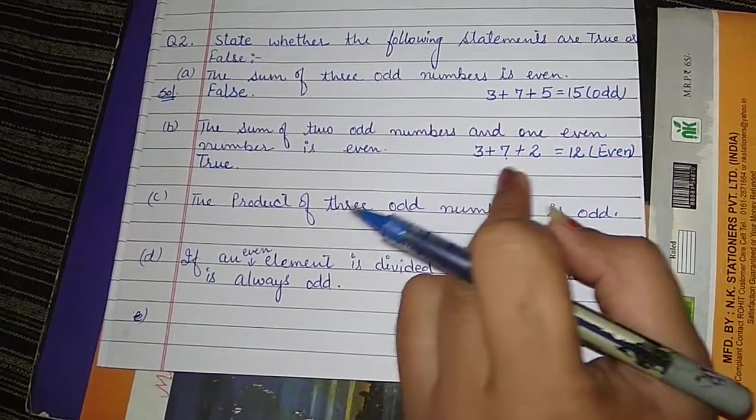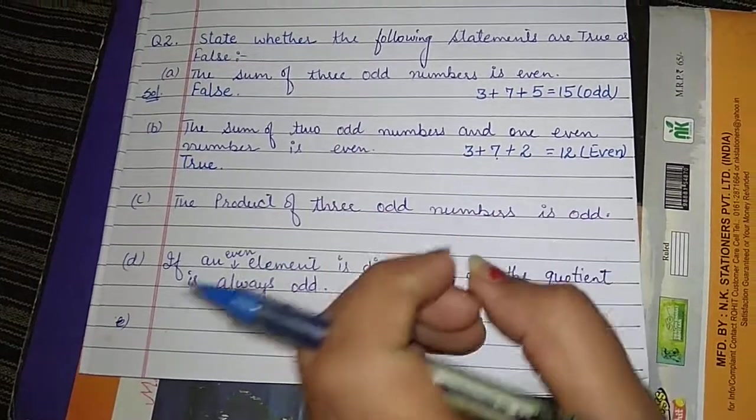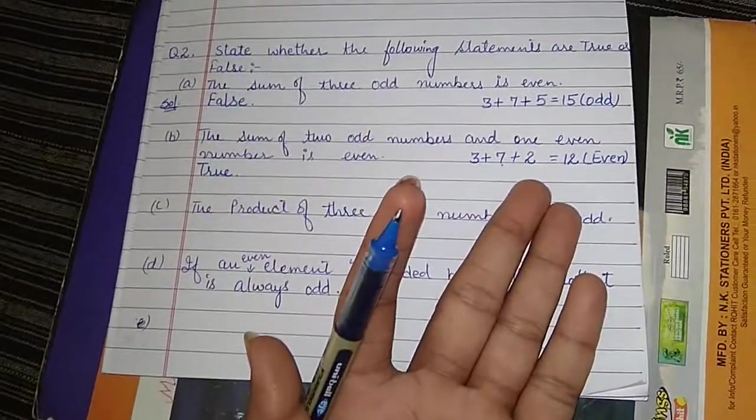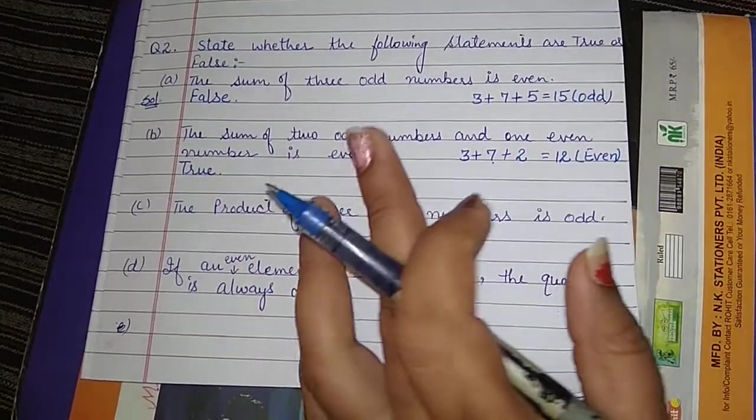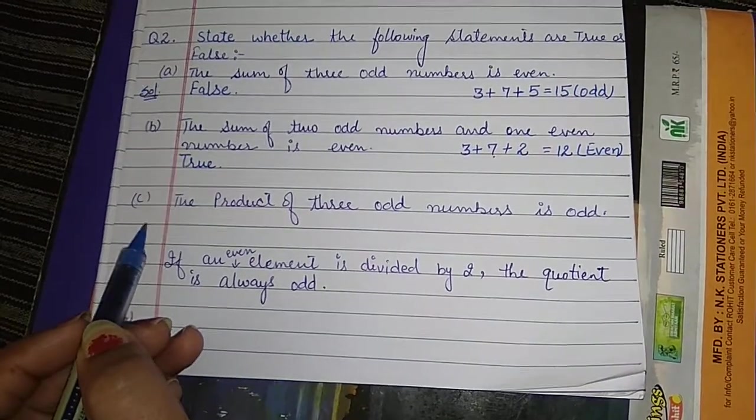Not these particular numbers, you can choose any numbers like five, nine, eleven, and any even number, that is four, six, eight, any number you can take. Now come to the next statement.